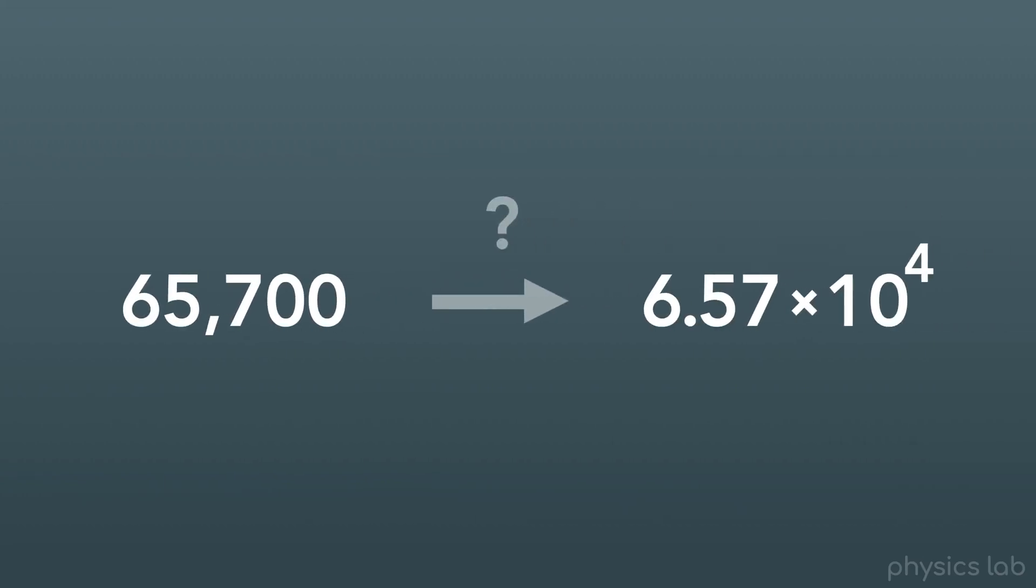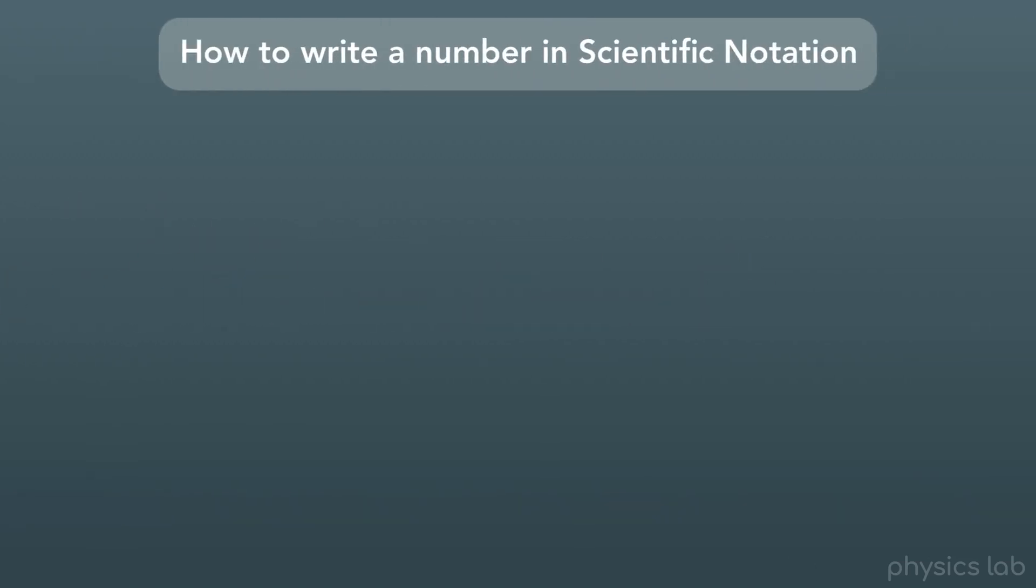Is there an easy way to take a number and write it using scientific notation? The trick is to move the decimal and count how many times you move it.